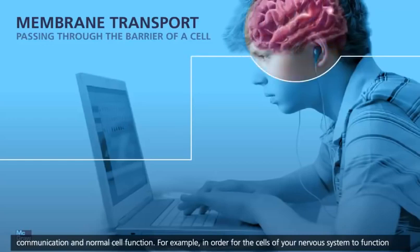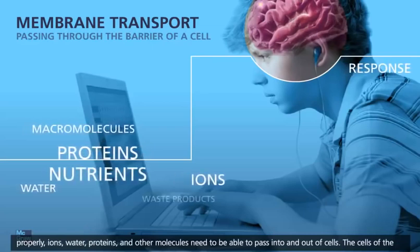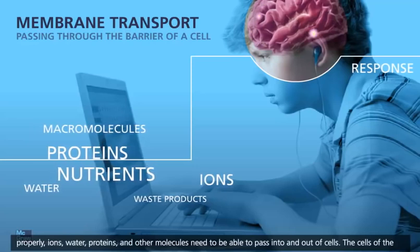For example, in order for the cells of your nervous system to function properly, ions, water, proteins, and other molecules need to be able to pass into and out of cells.